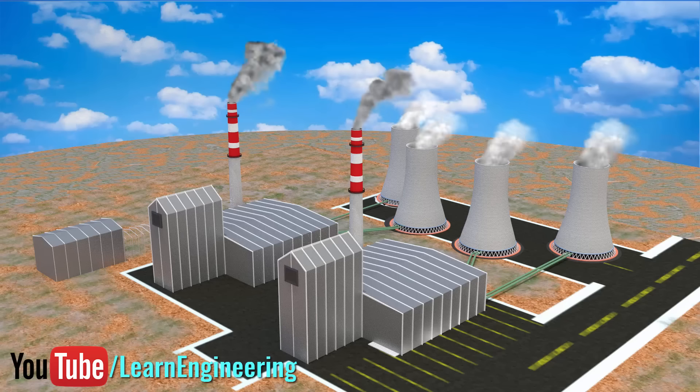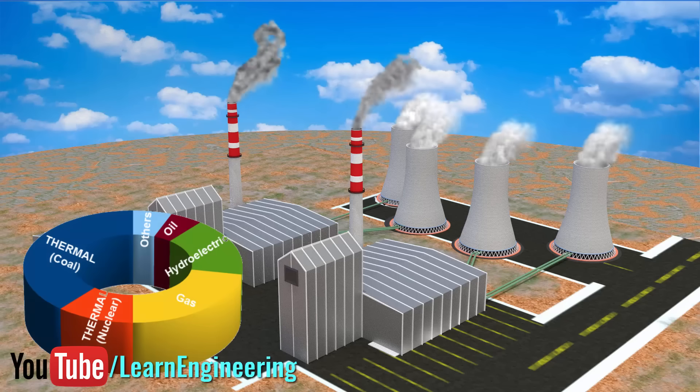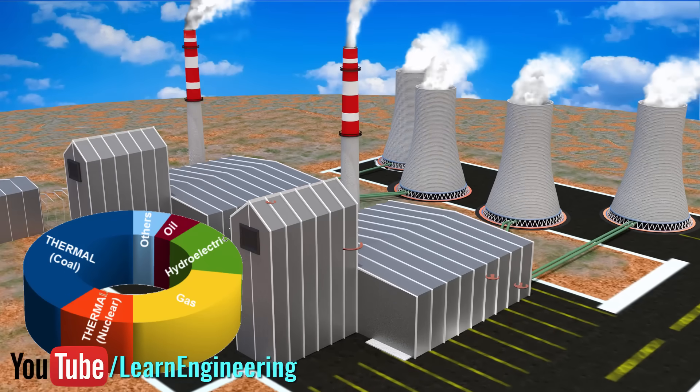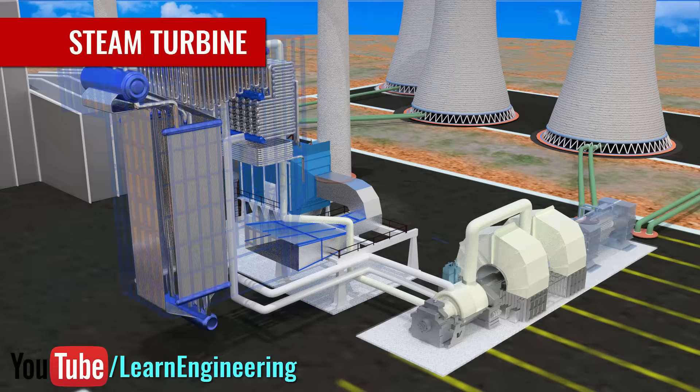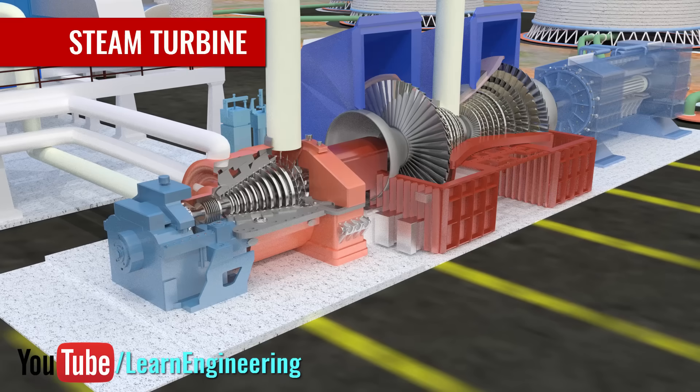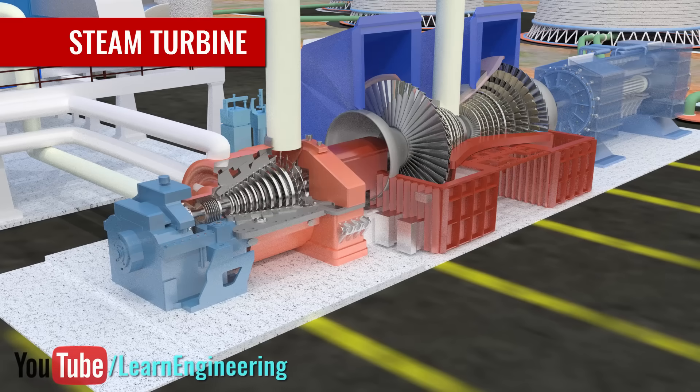Nuclear and coal-based thermal power plants together produce almost half of the world's power. Steam turbines lie at the heart of these power plants. They convert thermal energy in the steam to mechanical energy.